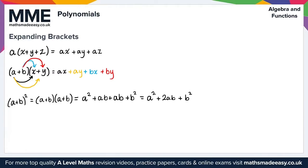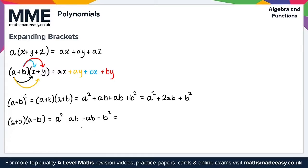The difference of two squares is a special type. So let's say we've got (a plus b) times (a minus b). Again this is just an application of FOIL. The first two terms give us a squared. The outside terms give us minus ab. The inside terms give us plus ab. And multiplying the last two terms gives us minus b squared. The minus ab and plus ab cancel, leaving us with a squared minus b squared. That represents the difference of two squares.